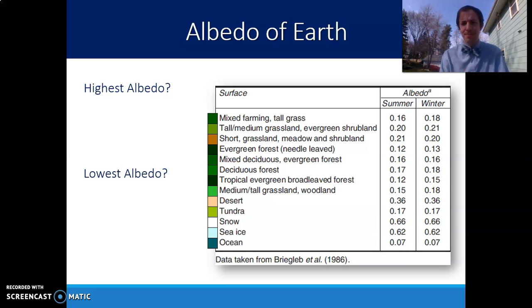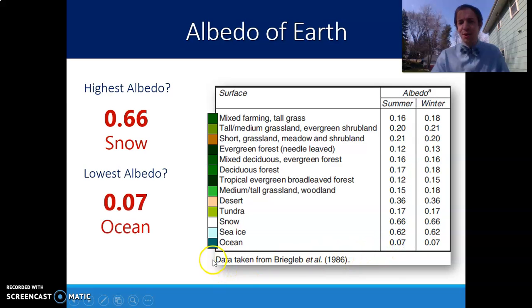Looking at these numbers, there are two that are pretty close. Snow and sea ice are both pretty reflective. But snow is the highest albedo. Our lowest albedo is the one that absorbs the most energy. So from this list, which of these is the most absorbing? Looking down here, there is one that is lower than the others, and that is the ocean.